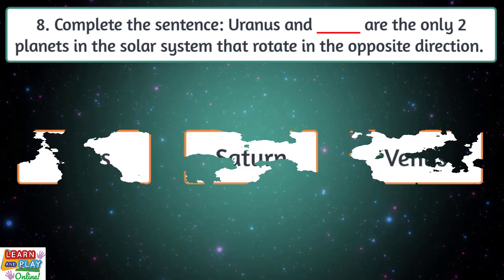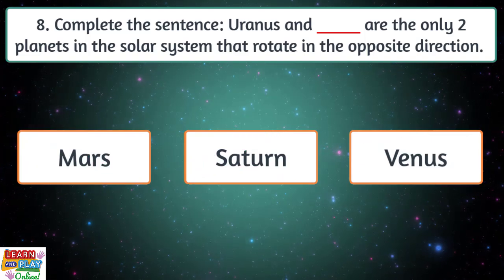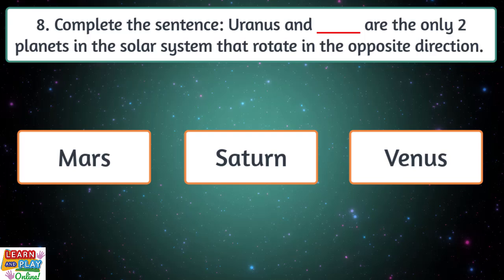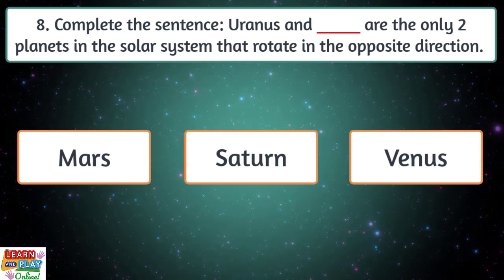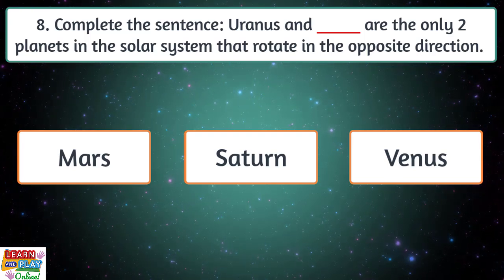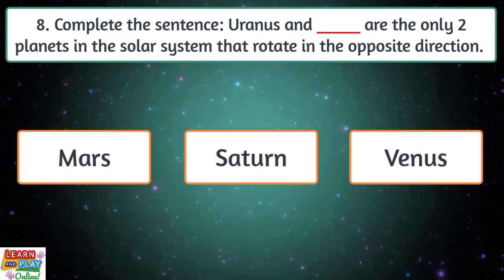Question 8. Complete the sentence. Uranus and... Are the only two planets in the solar system that rotate in the opposite direction? Is it Mars, Saturn or Venus?